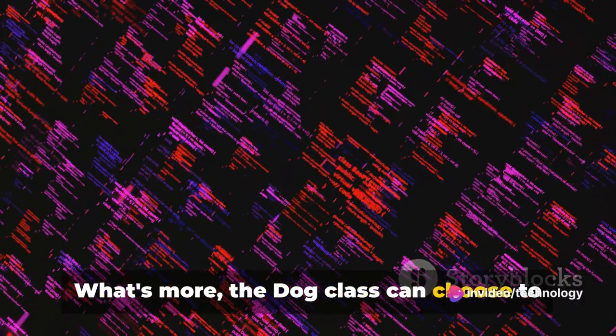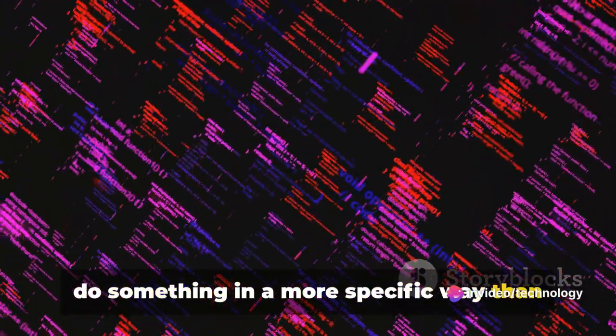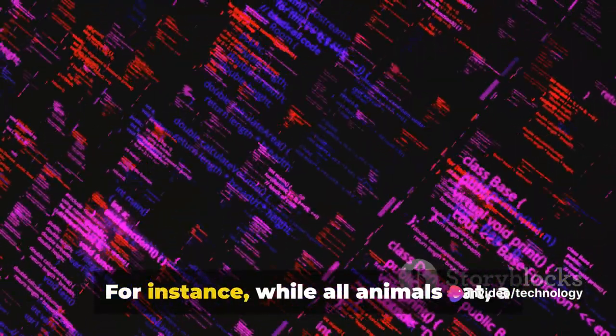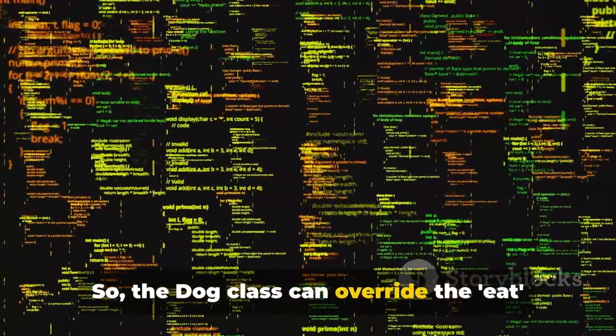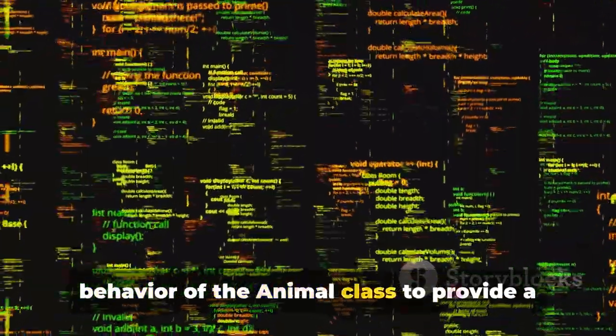What's more, the Dog class can choose to do something in a more specific way than the Animal class. For instance, while all animals eat, a dog might have a specific way of eating. So the Dog class can override the Eat behavior of the Animal class to provide a more specific implementation.